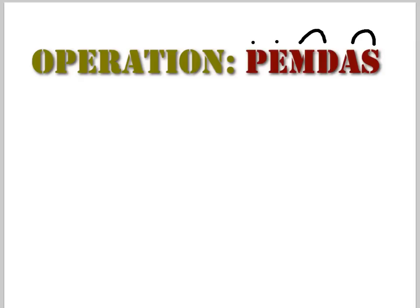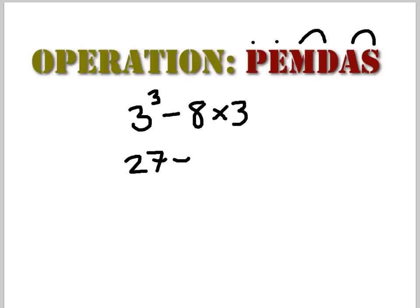Let's try 3 cubed minus 8 times 3. Any parentheses? No. Any exponents? Yes — 3 cubed is 3 times 3 times 3, which gives us 27. So we have 27 minus 8 times 3. Now, multiplication: 8 times 3 is 24. Then 27 minus 24 equals 3.